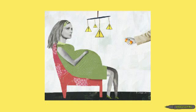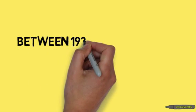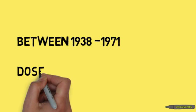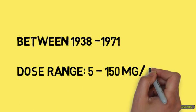DES was prescribed between 1938 and 1971, with doses starting at 5 and going up to 150 micrograms daily.